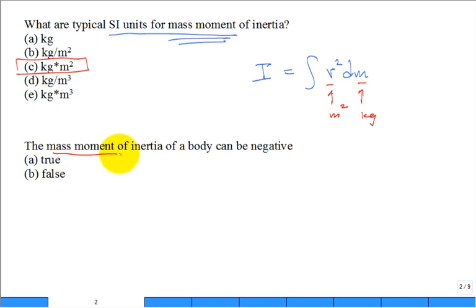The mass moment of inertia of a body can be negative. True or false? Well, here's the equation for it. False. And so it makes no sense. We never have a negative mass, okay? We're talking a real object.